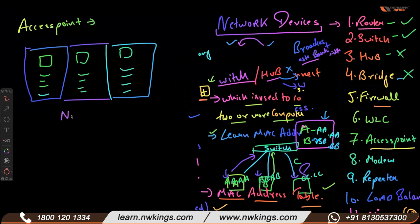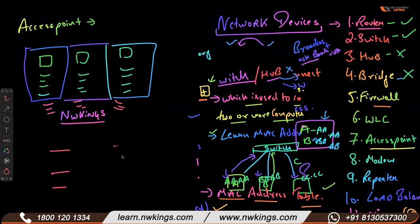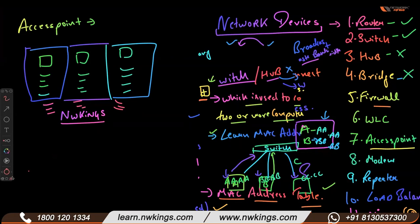Like suppose there is a Wi-Fi with the name NW Kings. So all access points are giving you the same Wi-Fi name wherever you go — even on the first floor, second floor, third floor, cafeteria, library — anywhere you go, you will have the same Wi-Fi name.